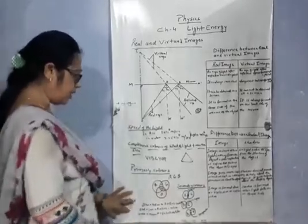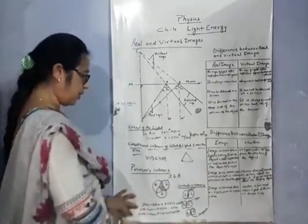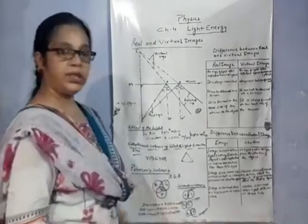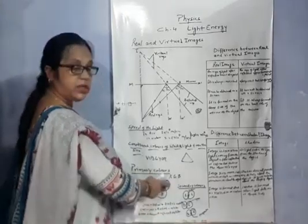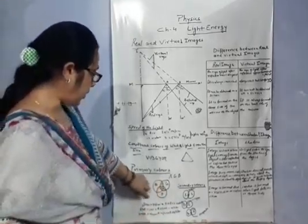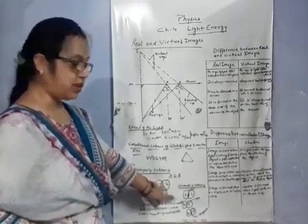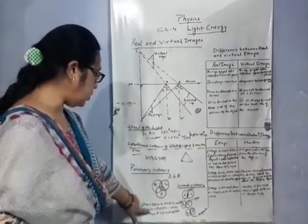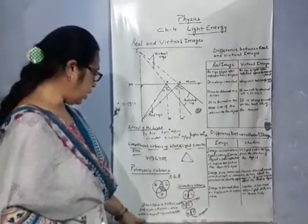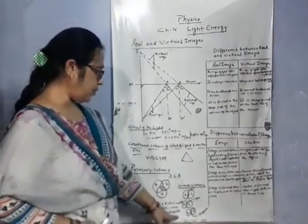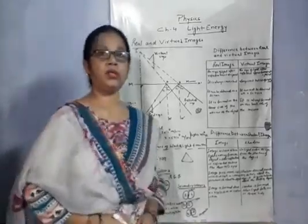On stage, we can use blue and yellow light for the appearance of white color. Red and cyan color are also used for the appearance of white color on a stage, and green and magenta color is also used for white color appearance on stage. That's all for today. Thank you and bye.